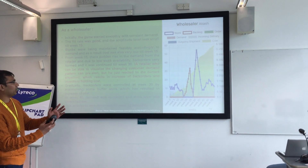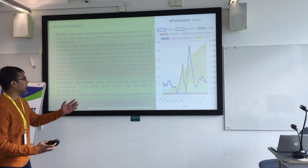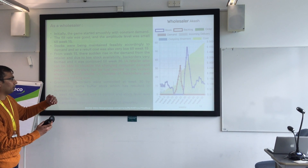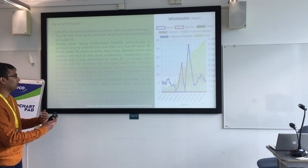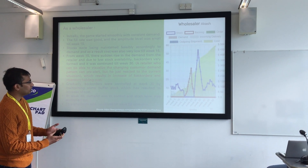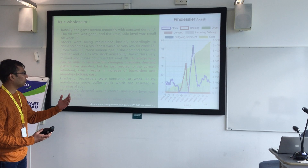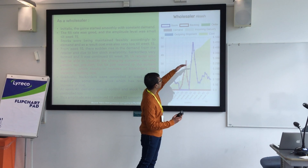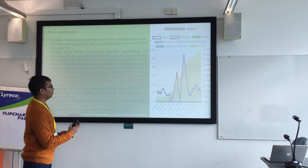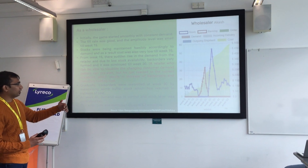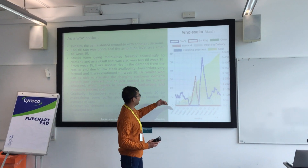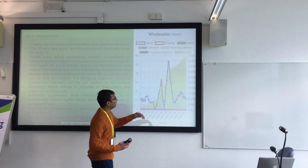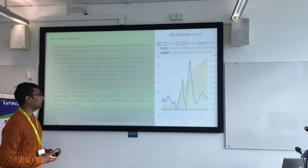To overcome the back orders, we started maintaining the stock level — the blue ones are stock level. Once we reached week 30, the back orders were controlled due to the high increase of the stocks. If we keep maintaining the stocks, obviously the cost will also be increased, but we have to keep it in our control. By the end of the 52nd week, everything was under control — our demand was steady, stock maintaining was low, and we maintained quite feasible inventory holding cost.